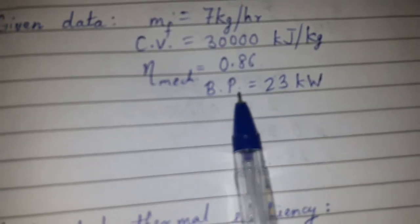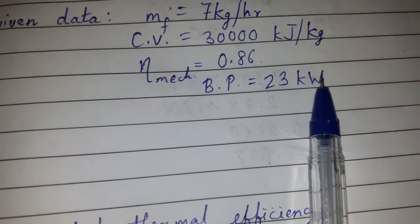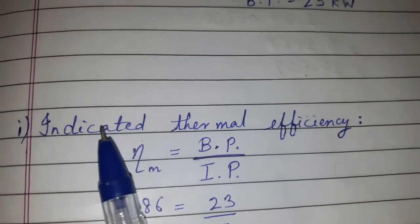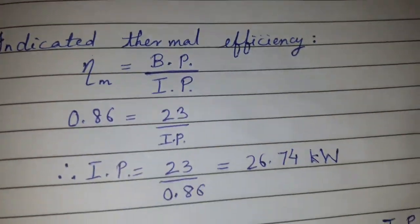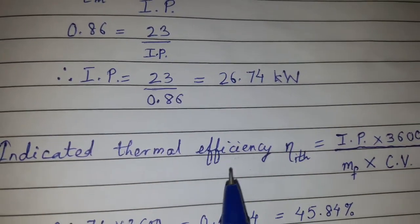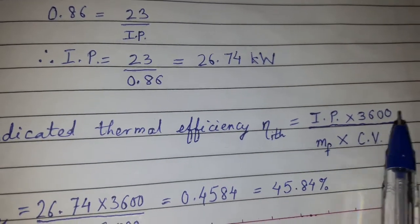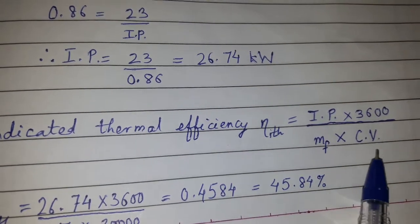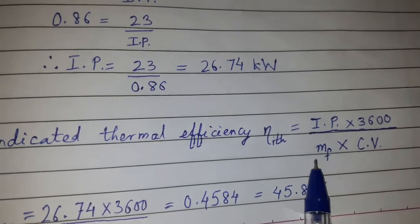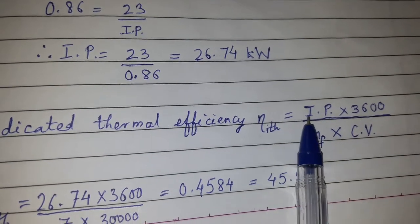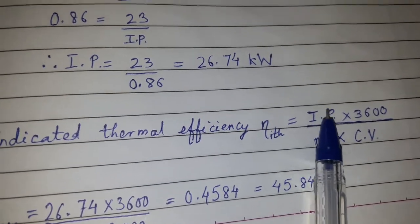To find indicated thermal efficiency, the formula is: η_ith = (IP × 3600) / (MF × CV). MF and CV are known, but IP is not known, so we need to calculate IP.